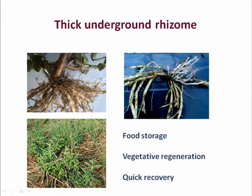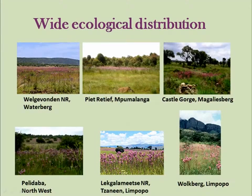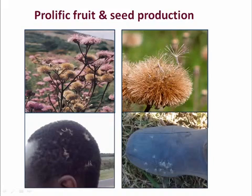Some of the characteristics that make it very invasive include the tap root — that makes it a very persistent tap root. It has food storage, and it gives it a quick recovery, especially after fires or after mowing. It has a wide agroecological distribution and has invaded almost every part of the country. It also produces a lot of fruit and seeds, which are wind-dispersed, and other agents act as modes of dispersal.